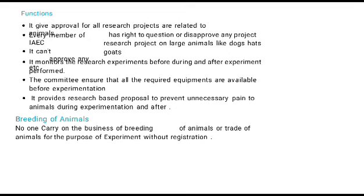Functions of IAEC: It gives approval for research projects related to animals. Every member has the right to question or disapprove any research project on large animals like dogs. It monitors research experiments before, during, and after the experiment. The committee ensures that all required equipment is available before experimentation and provides research proposals to prevent unnecessary pain to animals during experimentation.